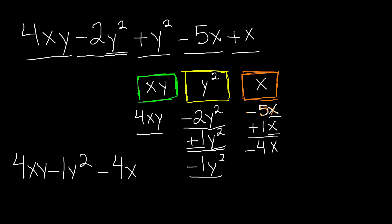One more thing: we have negative 1y². Remember, you can leave it as is, but since 1 times any number is just that number, you can also erase the 1 and write it simply as negative y². So our final answer is 4xy minus y² minus 4x. It may seem hard at first, but when you practice, it'll become really easy — like a habit. Stick around for more videos, and we'll see you guys next time!